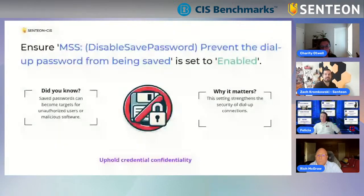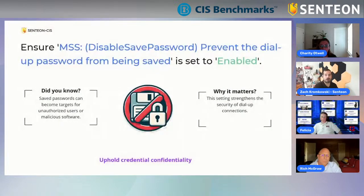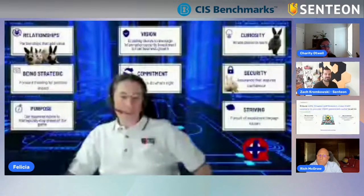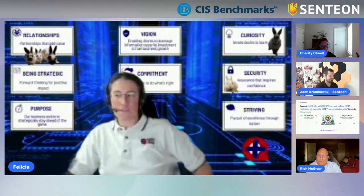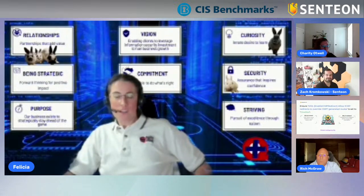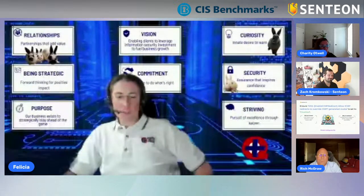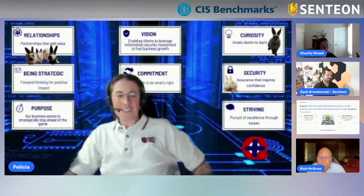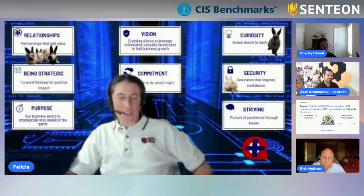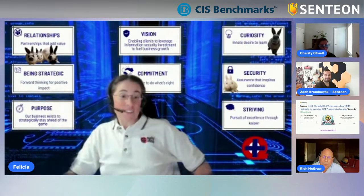Next: 'Enable ICMP redirects to override OSPF-generated routes.' Basically, anything attempting to mess around with the route for your traffic is attempting a man-in-the-middle attack or some other attack. It's in effect falsifying what should be the truth. So if we have a technical control that enables the computer to safeguard against something that has the opportunity to falsify its communications, you need to turn that on. In this case, the setting is disabled — meaning we protect against those redirects.